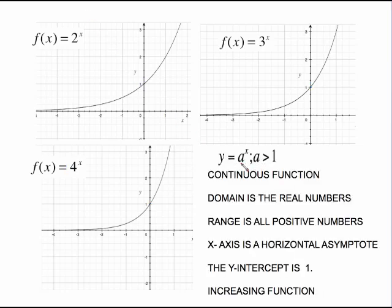So here are some generalities about these. For any curve in the form y equals a to the x, where a is greater than 1, it is a continuous function. That means it doesn't stop here. It keeps on going. The domain is the real numbers. Because it continues forever this way and forever that way, our domain is all real numbers. The range, though, is the positive numbers because this does not dip down below the axis. It doesn't touch the axis. Therefore, the range is all positive numbers.